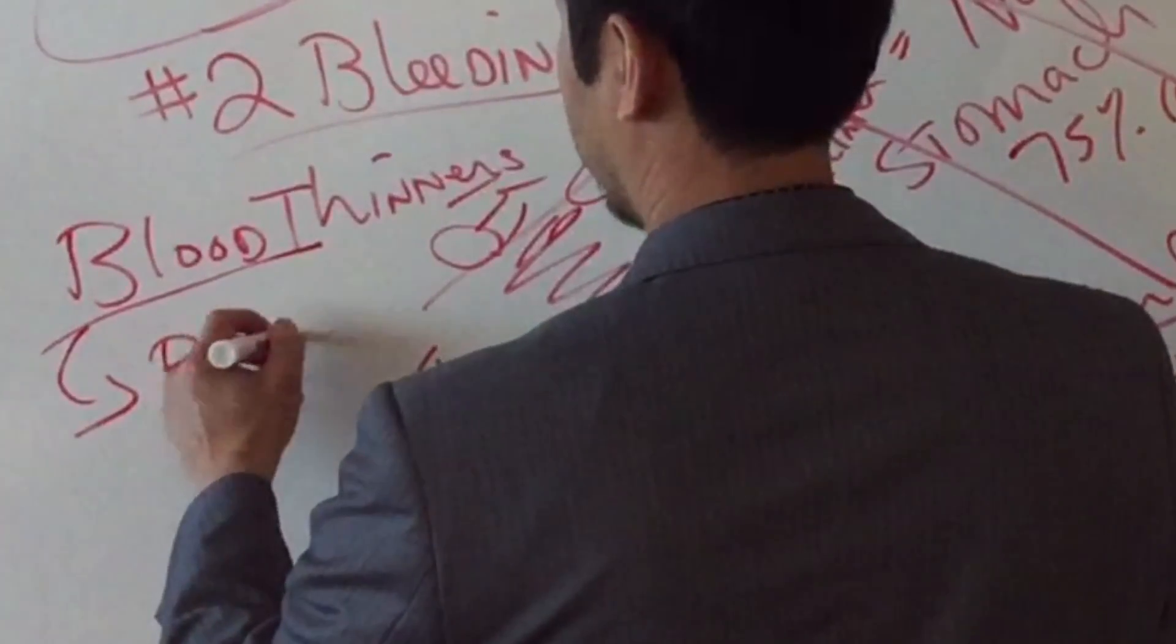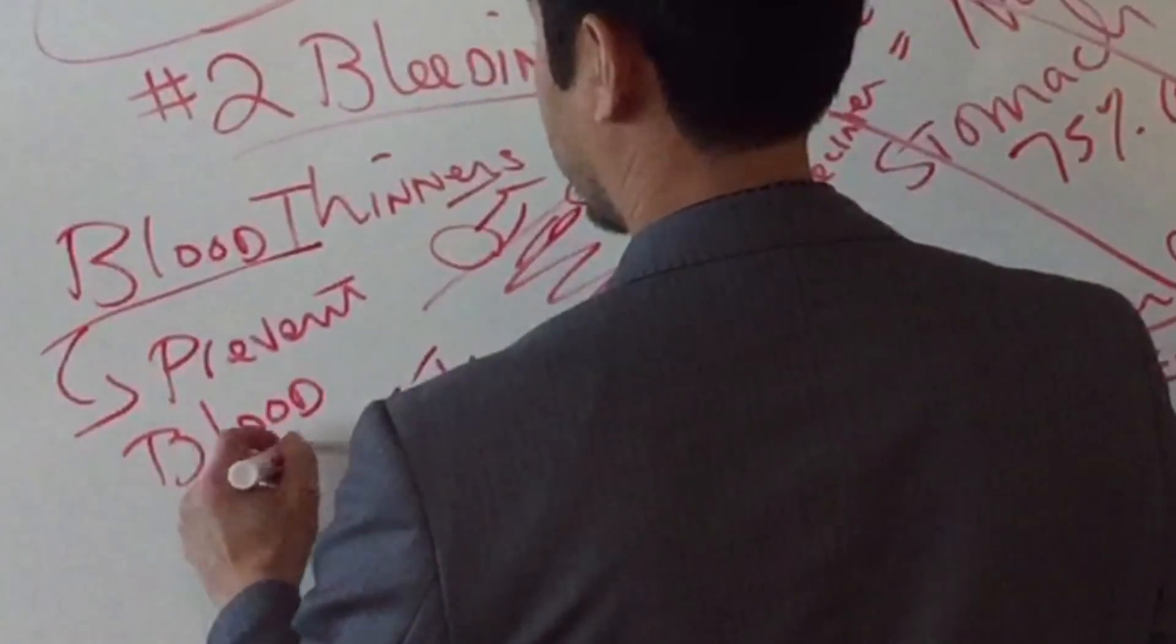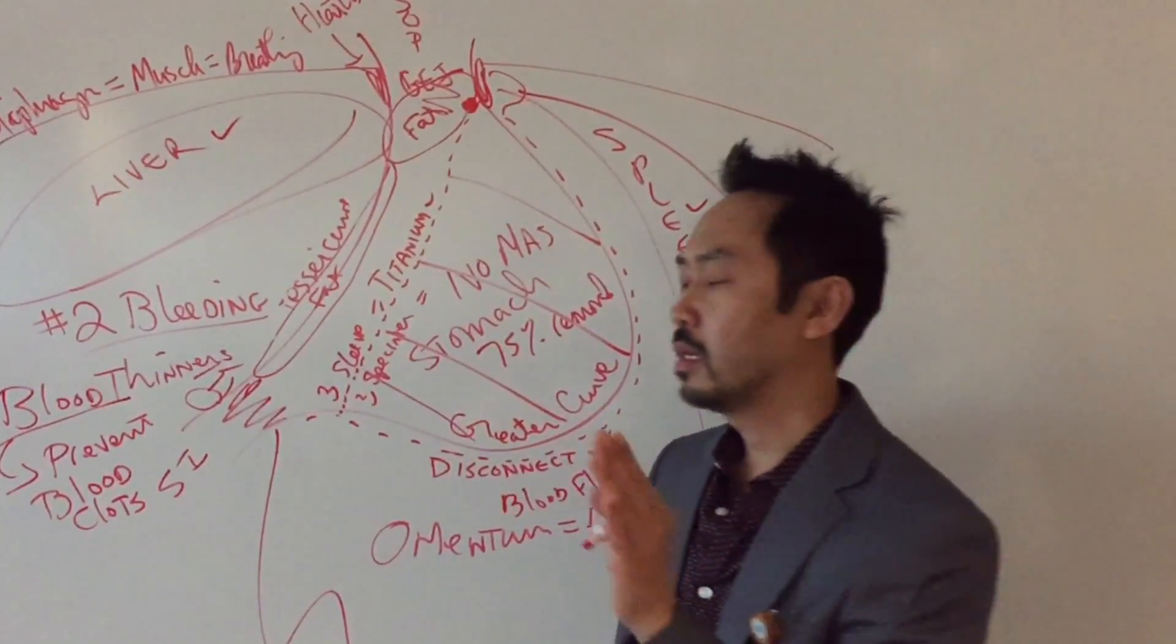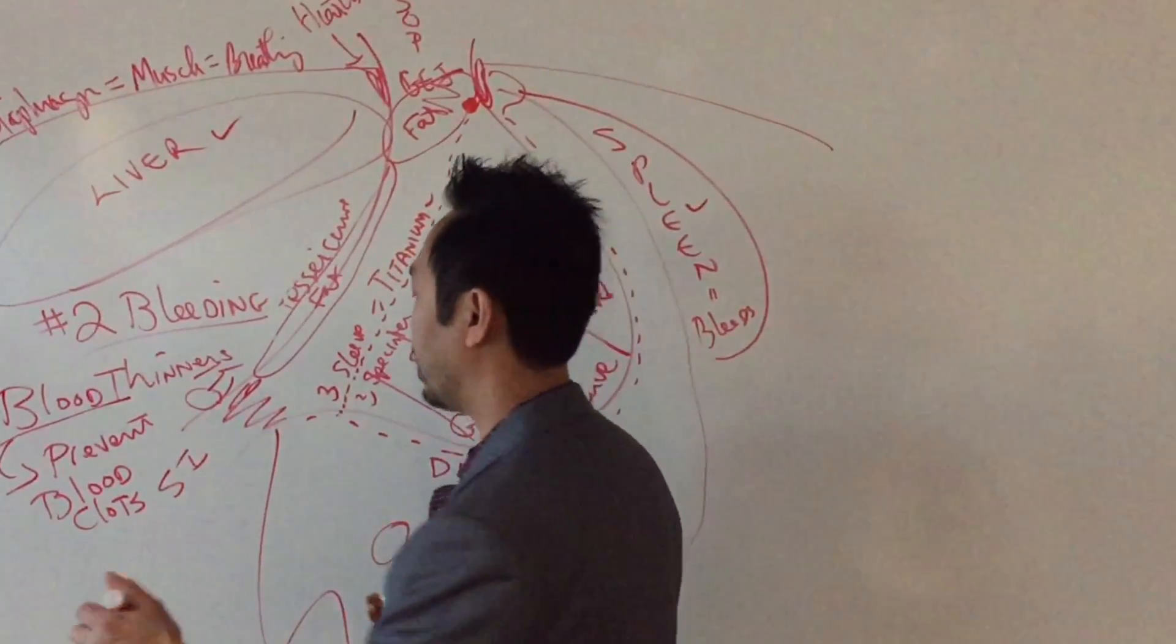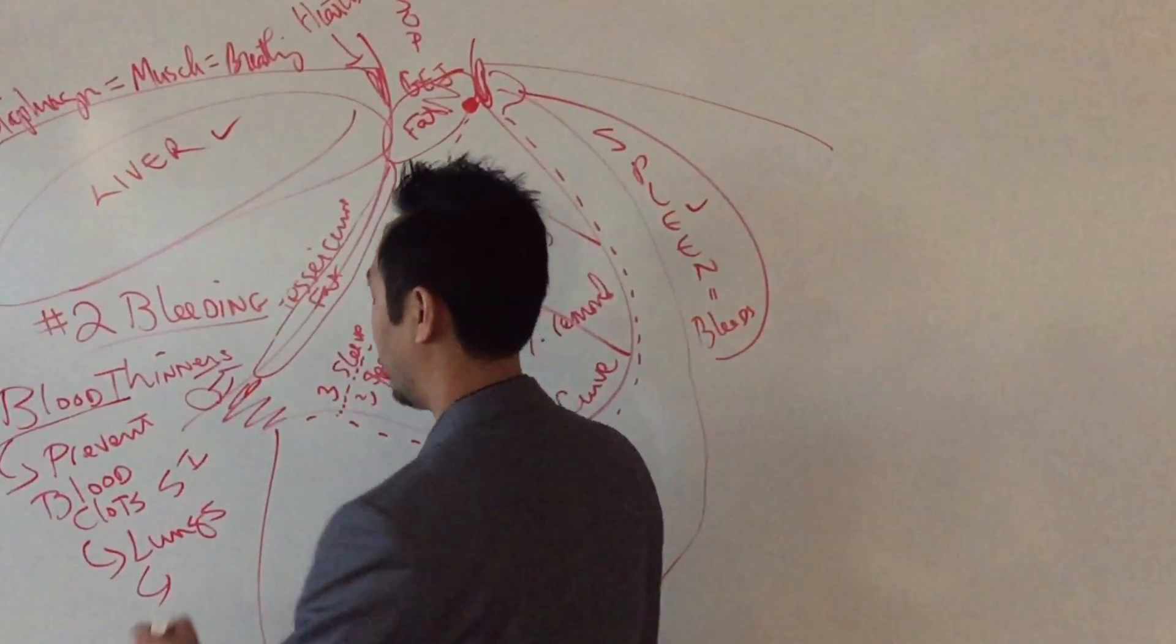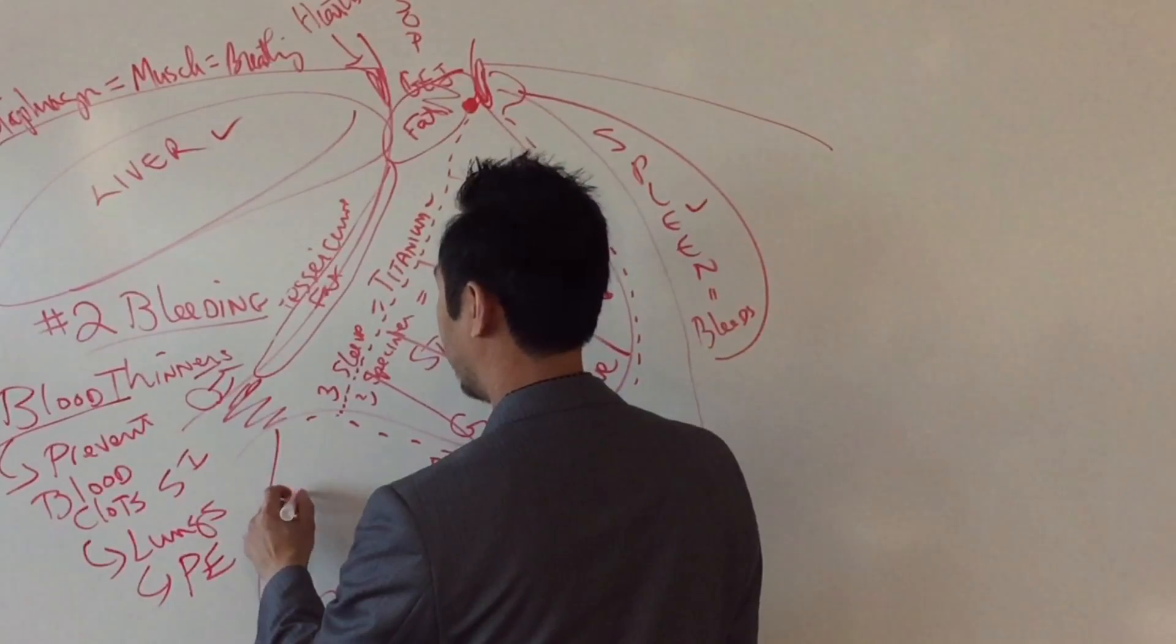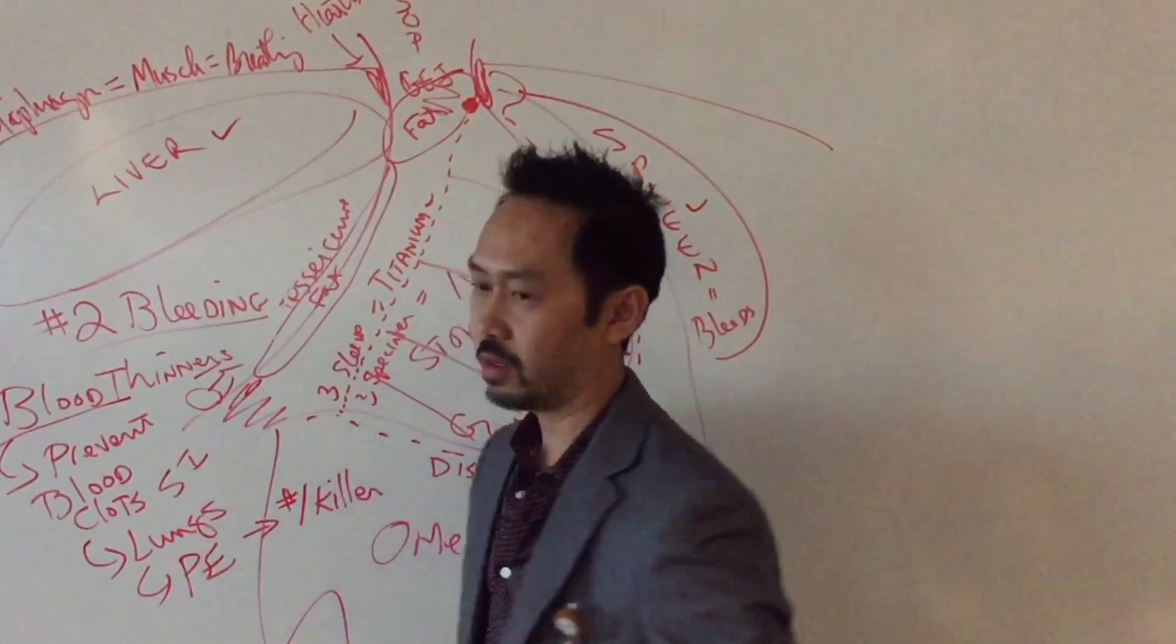Preventing blood clots. Now, what's the problem with blood clots? They kill you. There's nothing wrong with blood clots. The only thing, there's nothing wrong with blood clots unless they do what? Travel. Travel to where? Your lungs. And what's that called? Pulmonary embolism. A PE. Pulmonary embolism.